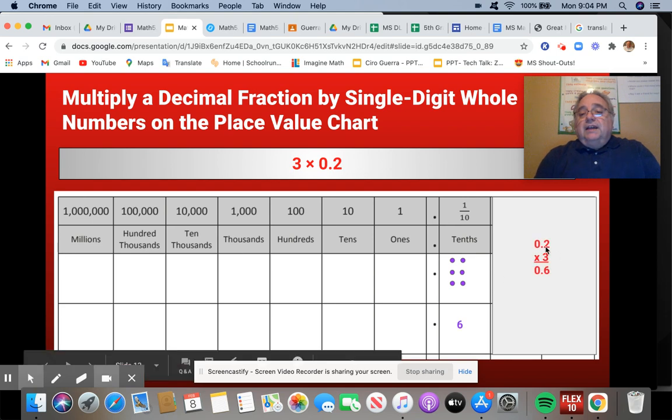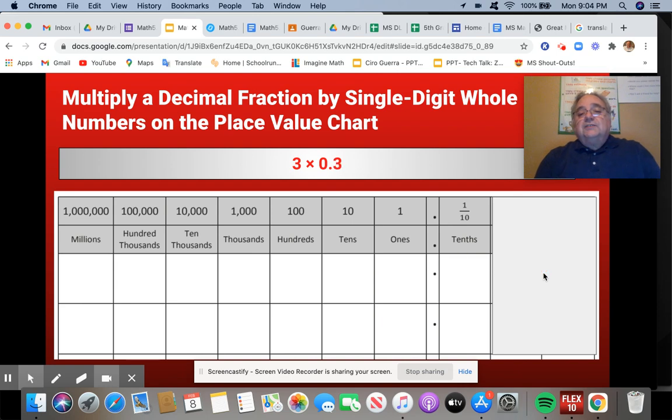If I multiply it on the standard algorithm, it is two times three is six, zero, have one decimal, one digit, there's the decimal. So that's my answer.